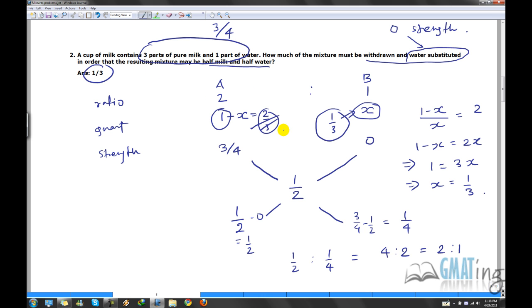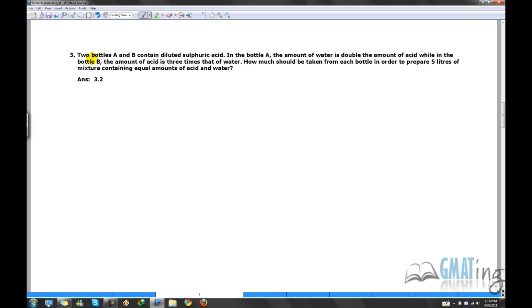So you saw that you can simply solve this problem by using the same technique. This was a fairly simple problem and you could have done it without even applying this method but this was just to demonstrate the technique. So let's now move on to the next question. This one is again a fairly common problem on the GMAT because it talks about diluted sulfuric acid and acid is again a mixture. So basically if you know anything about chemistry you would know that it's basically concentrated sulfuric acid with water.